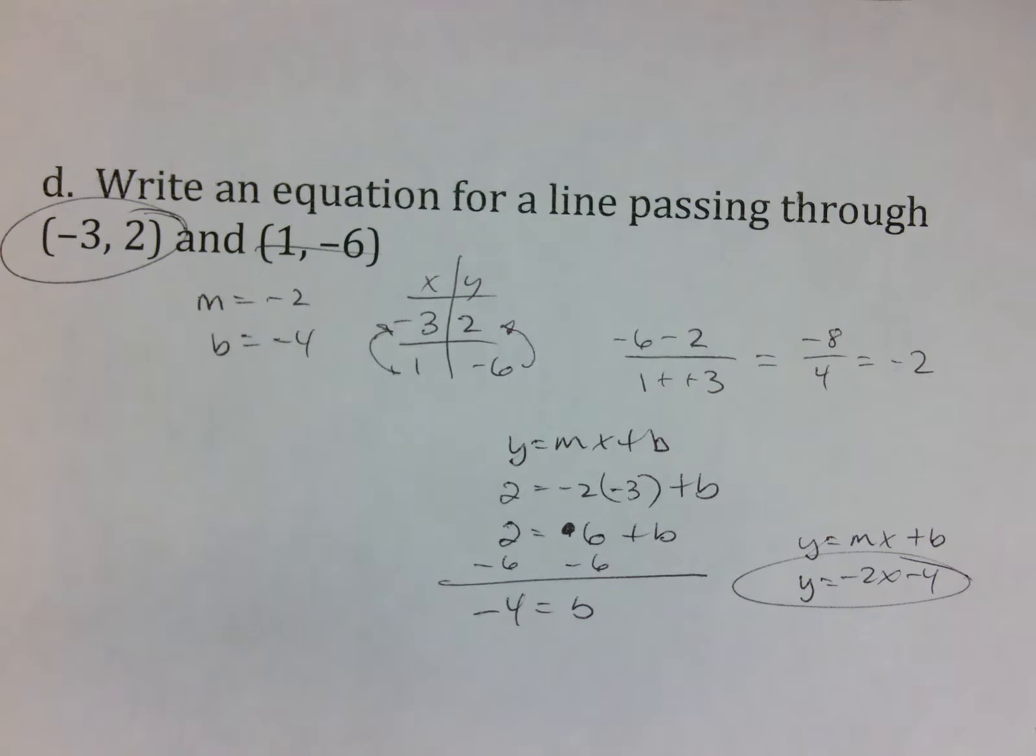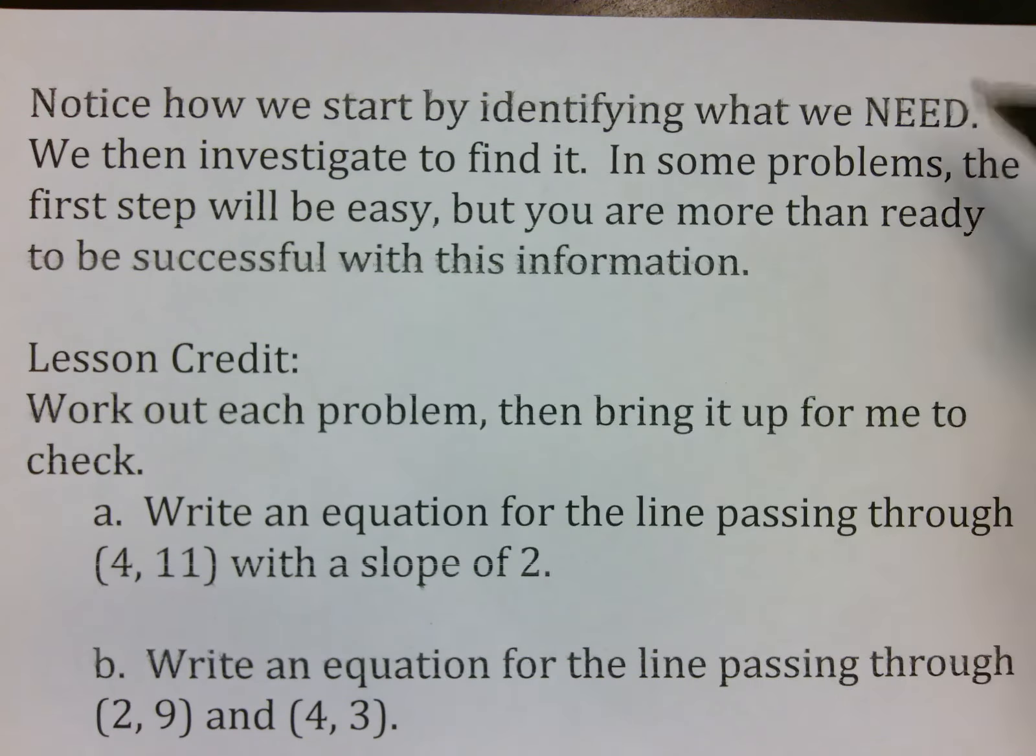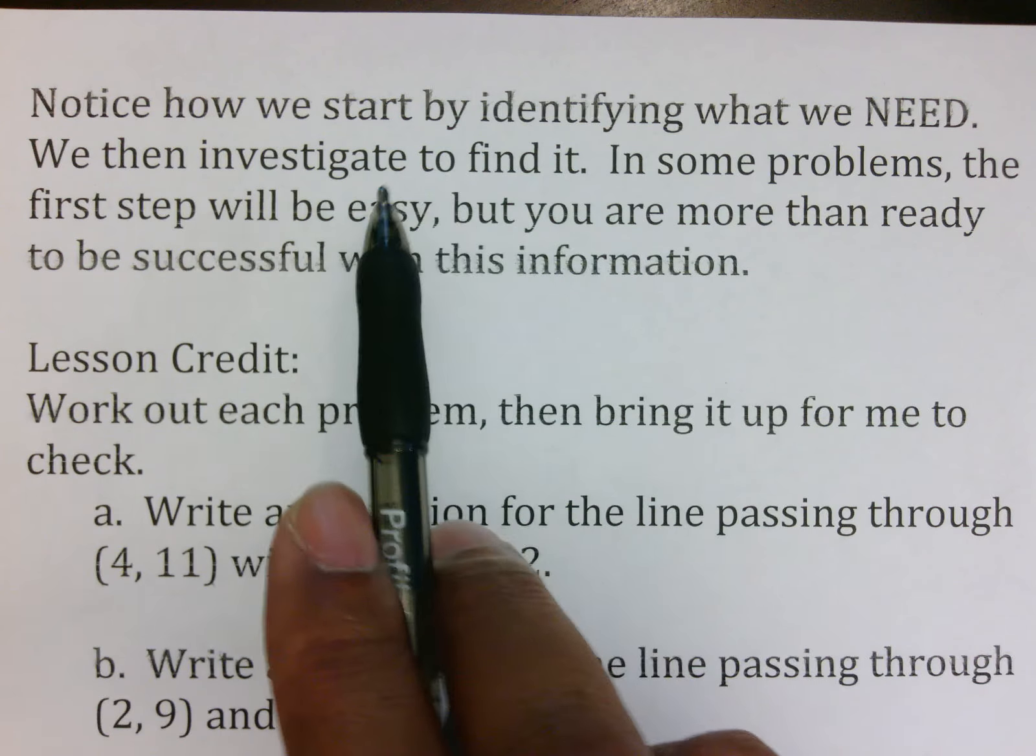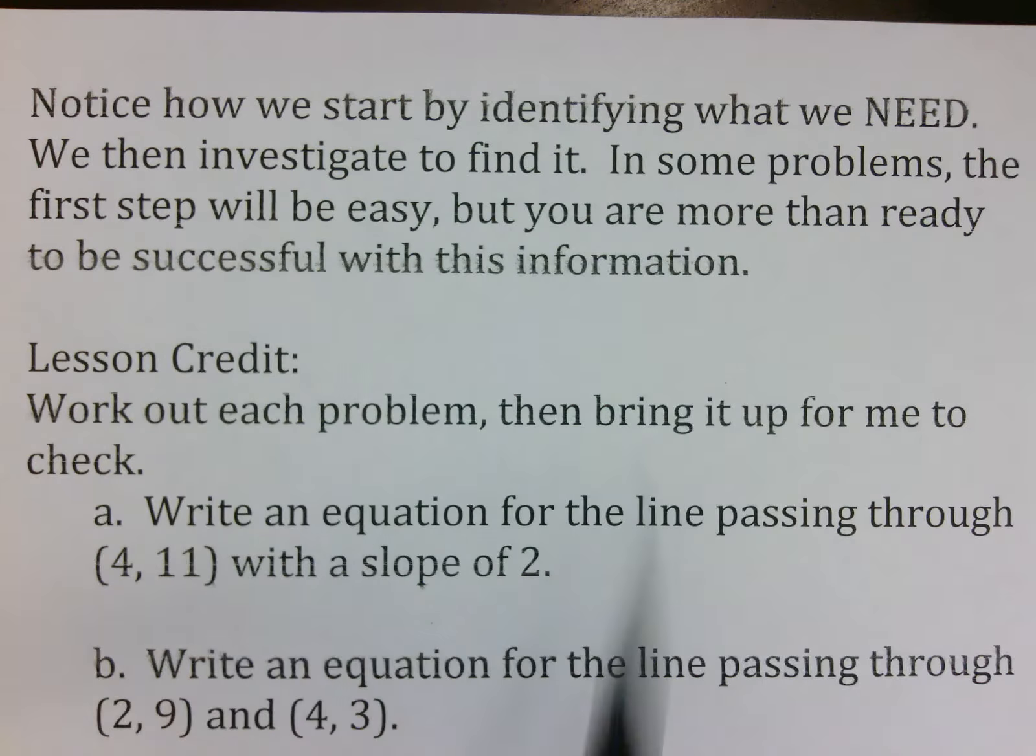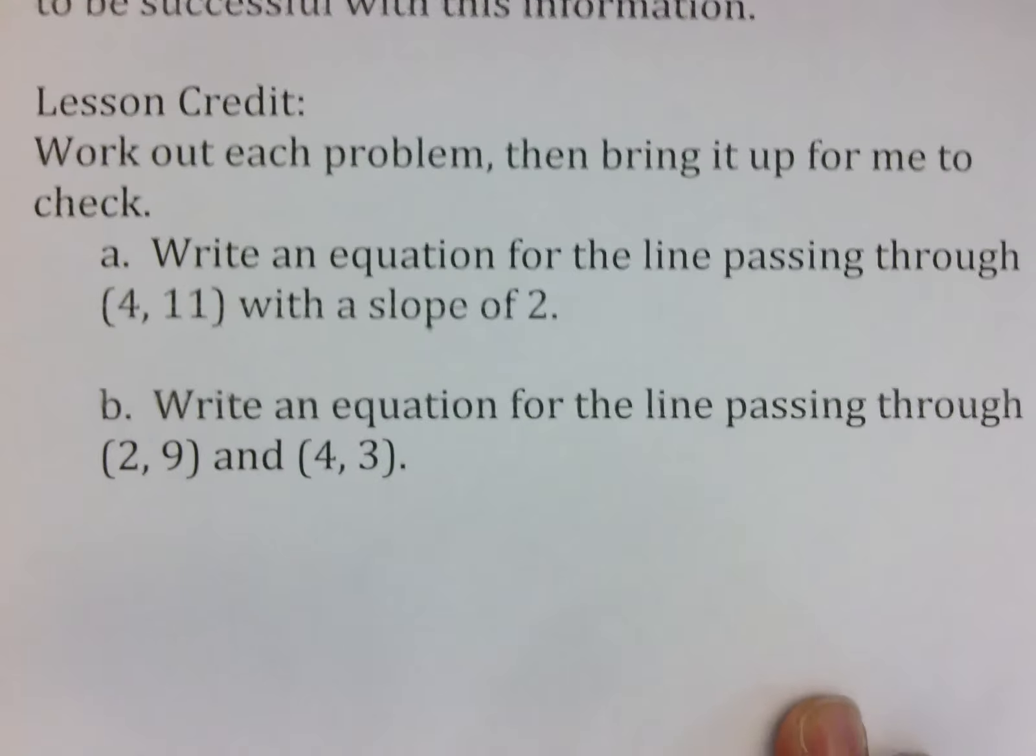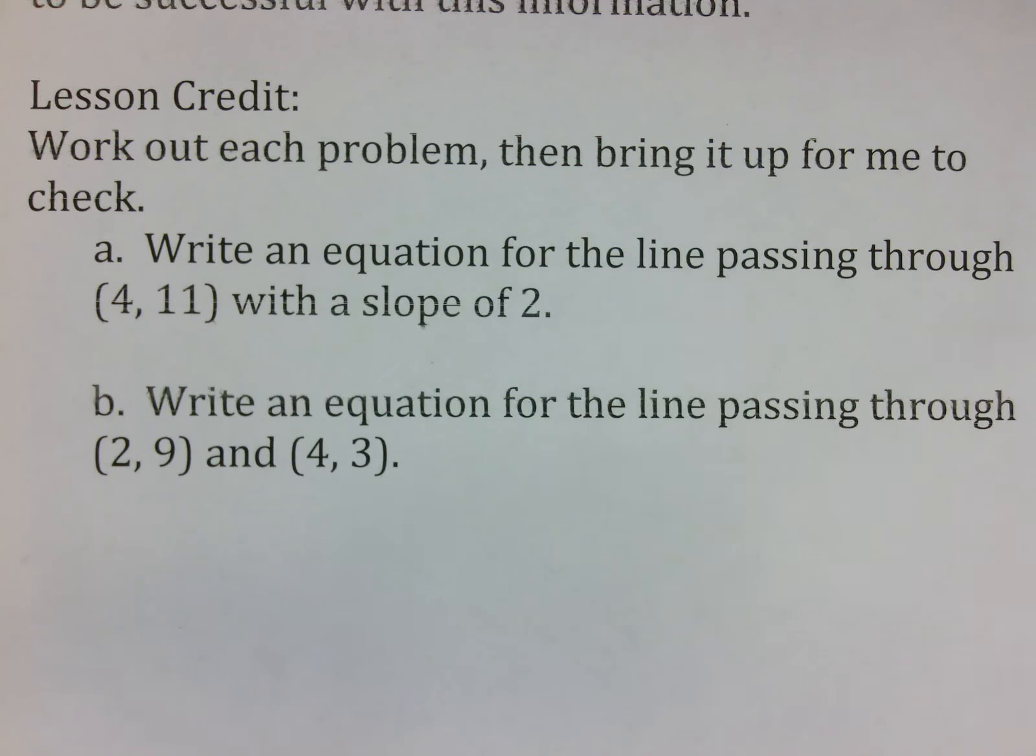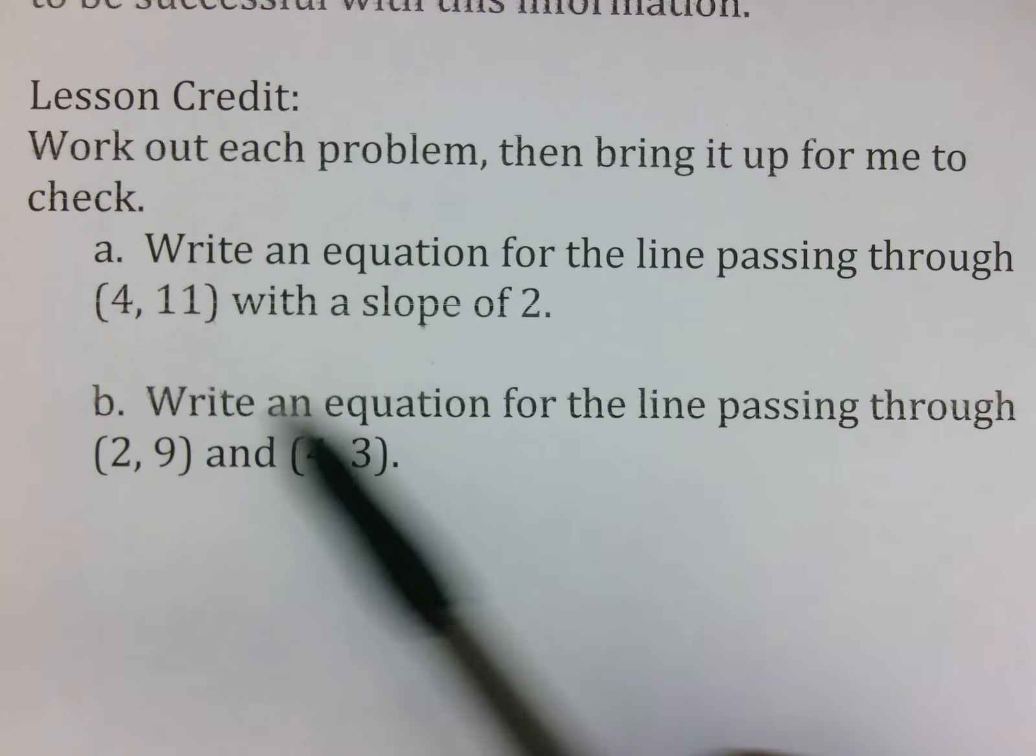Today is going to be a little bit more challenging, but don't let your frustration get to you. You've got plenty of time to practice this, ask questions, work together, and make sure you get better at it. Notice how we start by identifying what we need, that's when I write the m equals and the b equals, and then you do whatever is necessary to find it. Some of the questions, the m was already given to me, and other ones I had to find slope. In some problems, the first step would be easy, but you are more than ready to be successful with this information as long as you practice today and do your best on it. For lesson credit today, work this out and then bring it up to me for your credit for the day. The first one wants an equation of a line passing through this point with a slope of 2. The second one wants an equation for a line passing through these two points. When you finish that, bring it up, get your lesson credit, get your worksheet, and then we'll go from there. Good luck.